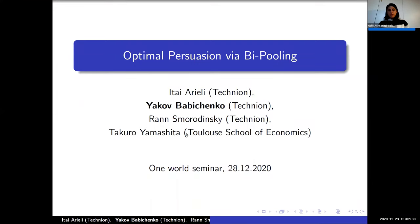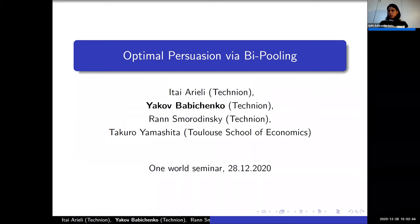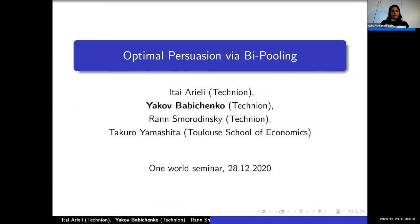Welcome everybody. We are happy and proud to have here with us today Yakov Babichenko. He did his PhD at the Hebrew University, then a postdoc at Caltech, and now he's an associate professor at the Technion, Israel Institute of Technology. He received the Creel Award for Research Excellence in 2018, and he studies mainly adaptive learning and complexity of equilibrium. He will talk to us today about optimal persuasion via B-pooling. Yakov, the stage is yours.